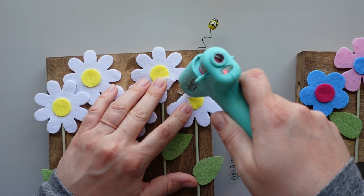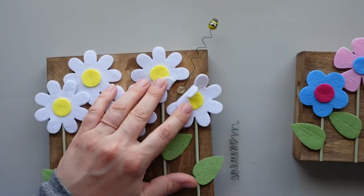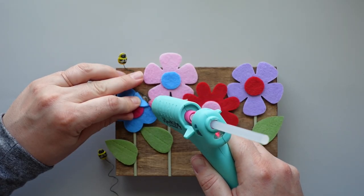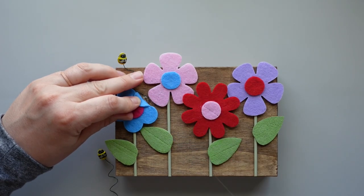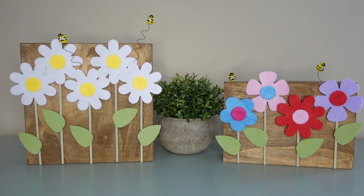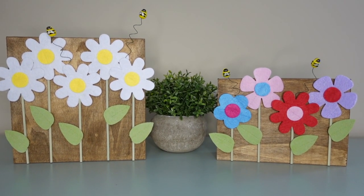I put another bee on top of the glue to sandwich the wire between the bees. Then I used hot glue to attach the other end of the wire to the sign, hiding the glue behind a flower so it wouldn't be seen. I repeated the process with three more bees and these whimsical flower signs were finished. I think I like the white flowers best. Which ones do you prefer?